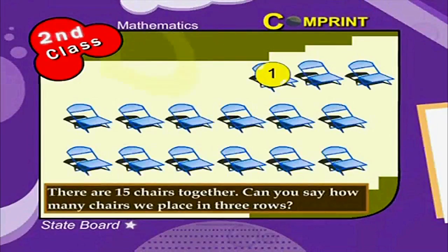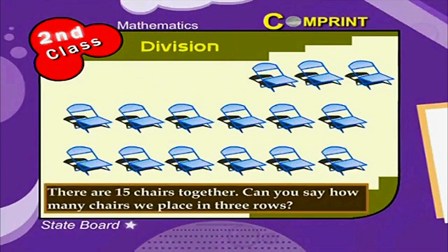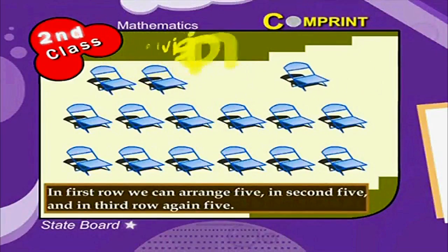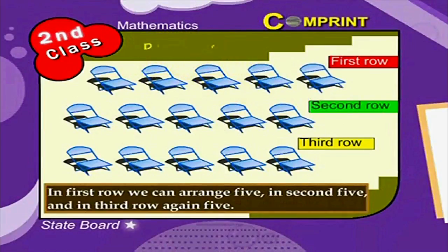For example, there are 15 chairs together. Can you say how many chairs we placed in 3 rows? In first row, we can arrange 5. In second, 5. And in third row again, 5.